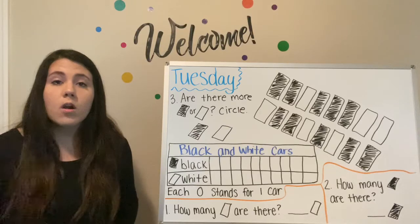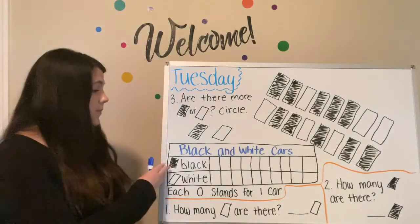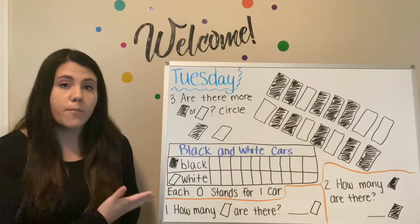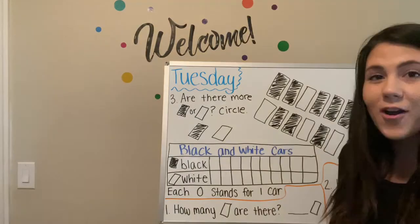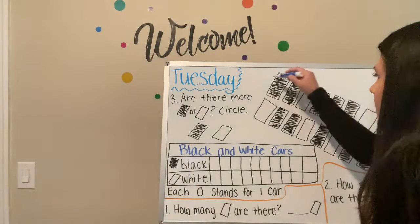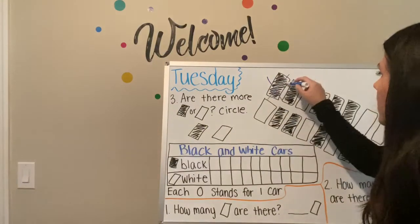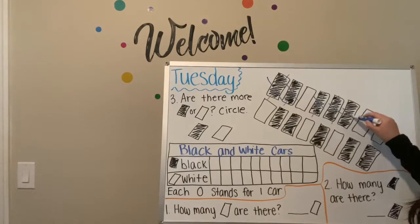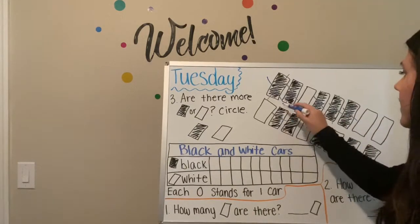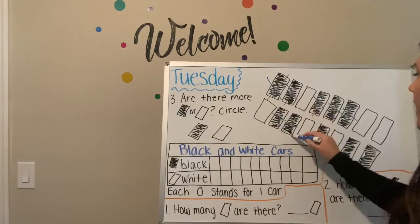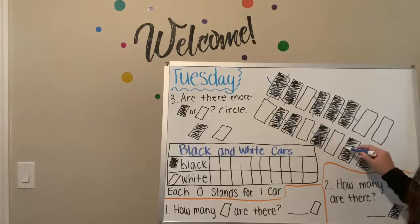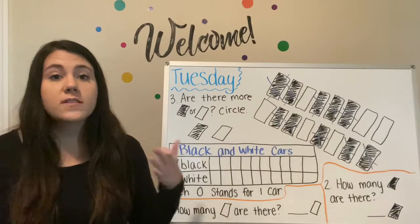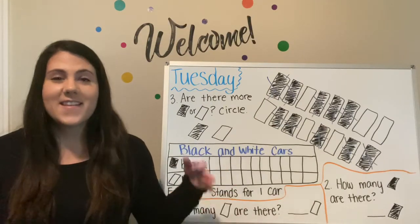We are going to cross out each car as we count. So we're going to start with the black cars and cross them out as we go. Let's count the black cars — ready? One, two, three, four, five, six, seven, eight, nine, ten. So we crossed out ten black cars — yes, ten!